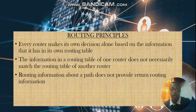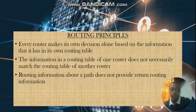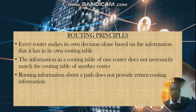Every router makes its own decision alone based on the information in its own routing table. The information in one router's routing table does not necessarily match another router's routing table. Also, the routing information about a path does not necessarily provide a return routing path for that packet — the packet could come back via another route.